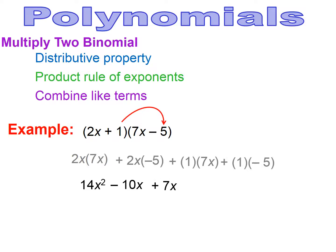And then 1 times negative 5 gives you minus 5. So you've multiplied everything through. Now your last step is to combine the like terms, and the like terms here are the minus 10x plus 7x.